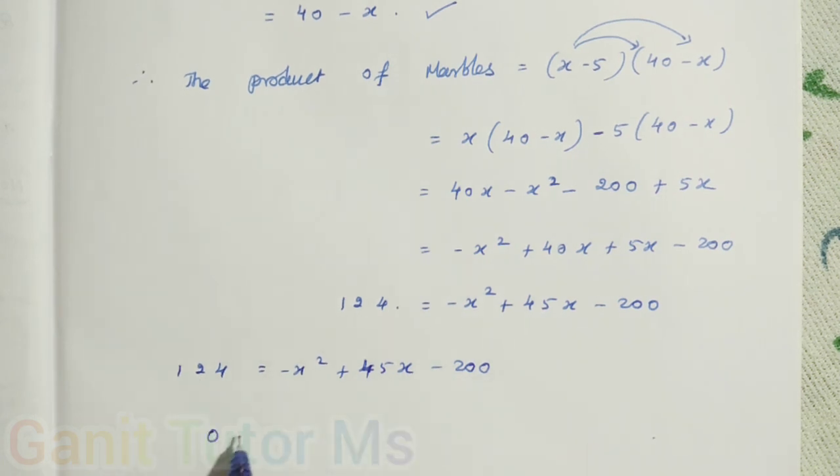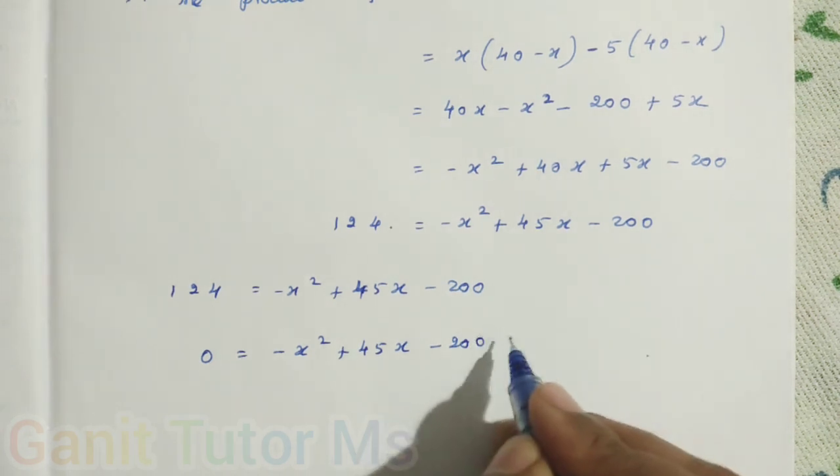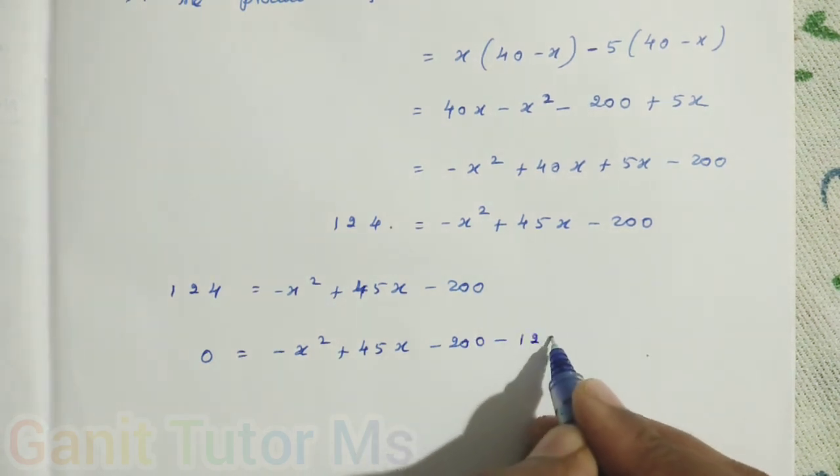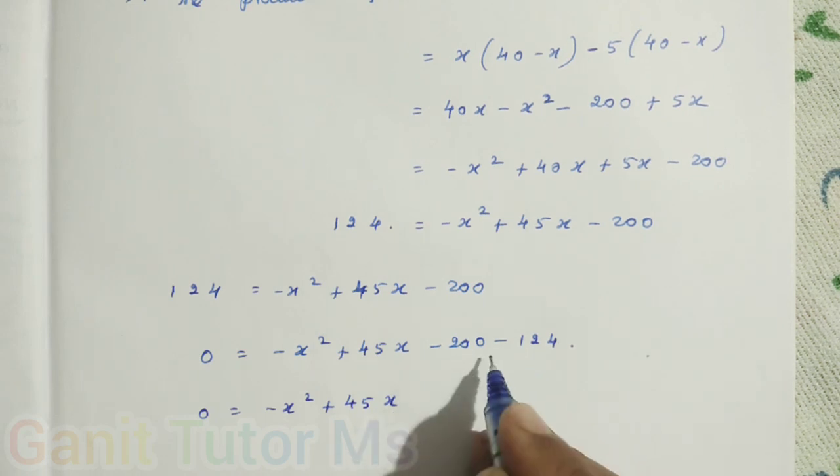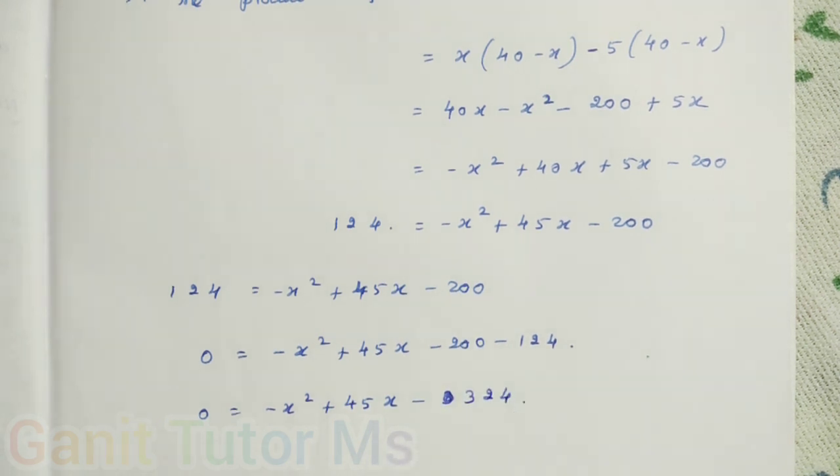0 is equal to minus x squared plus 45x. Then minus 200, plus 124 will go across the equal sign. It became minus 124, so minus 124. 0 is equal to minus x squared plus 45x minus 200 minus 24. Same sign, so same sign addition. Put a same sign, so minus 324.